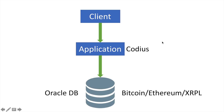The solution to the scalability problem was introduced long ago, and it is called the 3-tier application model, where application logic sits aside from the database. Codeus is exactly this application middleware. In the 3-tier model, clients do not interact directly with the database — all client requests are sent to the application layer, and the application decides whether to send or retrieve data from the database. This approach gives a lot of flexibility to application developers.